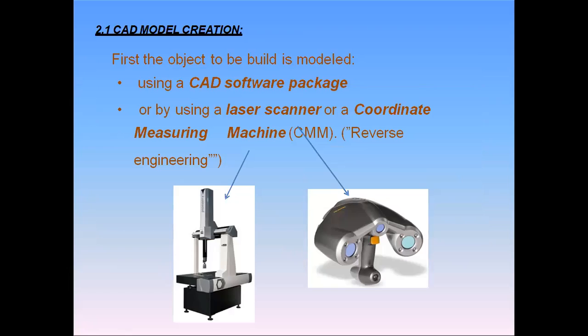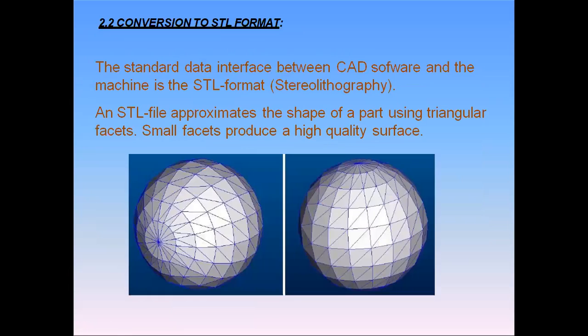CAD model creation can be done using different CAD softwares. Then the conversion to STL format — it is also called stereo lithography format. The STL file approximates the shape of a part using triangular facets. Smaller facets produce a higher quality surface. So the second step is conversion of the 3D model into STL format.